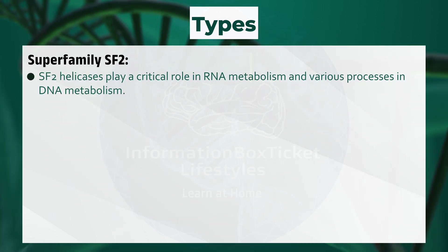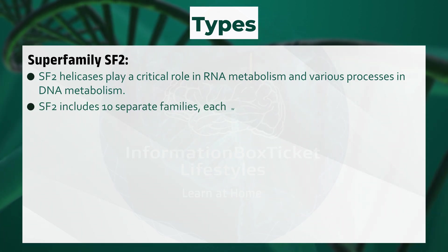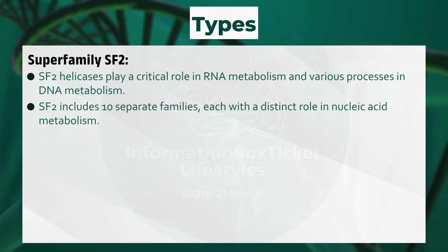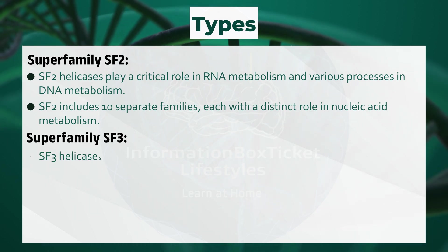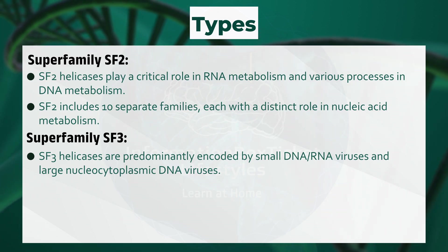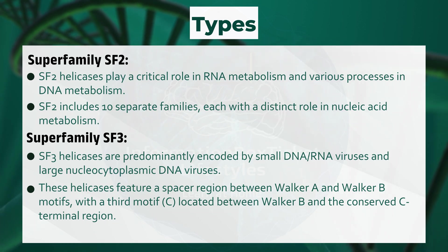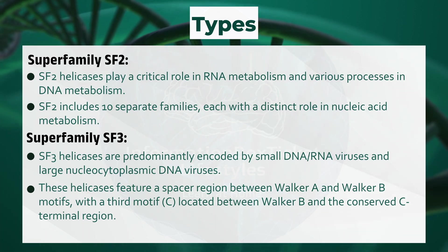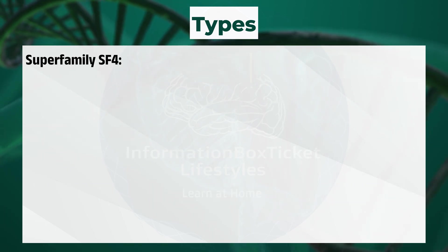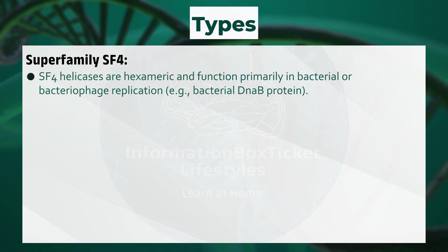Superfamily SF2: SF2 helicases play a critical role in RNA metabolism and various processes in DNA metabolism. SF2 includes 10 separate families, each with a distinct role in nucleic acid metabolism. Superfamily SF3: SF3 helicases are predominantly encoded by small DNA/RNA viruses and large nucleocytoplasmic DNA viruses. These helicases feature a spacer region between walker A and walker B motifs, with a third motif C located between walker B and the conserved C-terminal region.